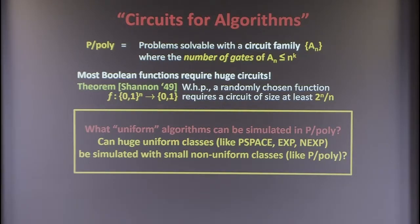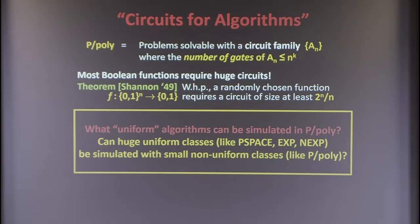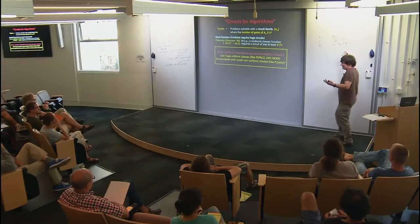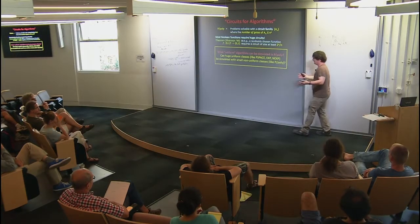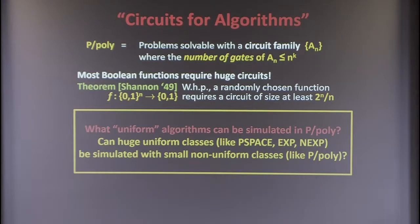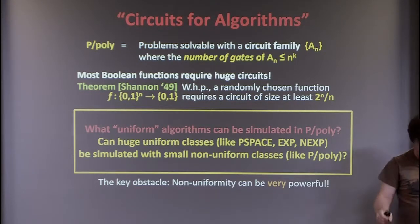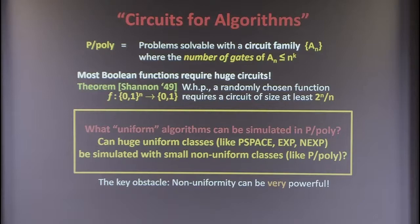You would think the answer is obviously no — that allowing yourself exponential time, even with a different circuit for each input length, shouldn't make exponential time become polynomial. Exponential is just too big. But the thing is, we just really don't know how to reason about these infinite models. The key obstacle is that non-uniformity can be very, very powerful, as shown by the fact that undecidable problems can be in P/poly.